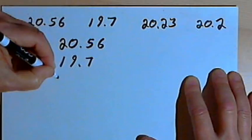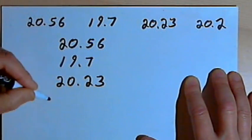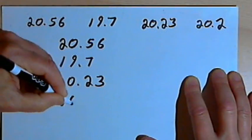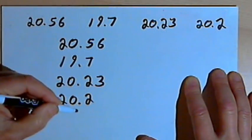I'll add my next number to the list. That's 20.23. And my last number is 20.2. So the decimal points are all lined up in a vertical column.